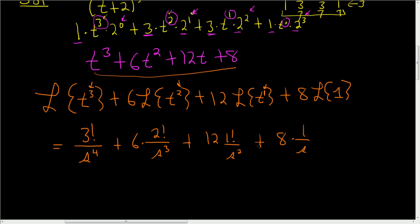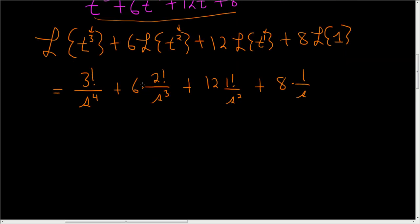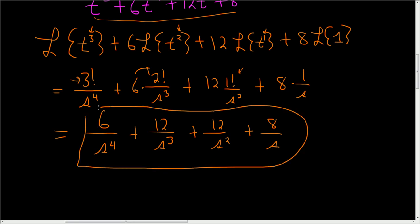To finish, we just have to clean it up. So 3 factorial is 6, so this is equal to 6 over s to the 4th, plus 6 times 2 is 12, so you get 12 over s cubed, plus 12, because 1 factorial is 1, so 12 over s squared, plus 8 over s. And that is it. That is the answer.